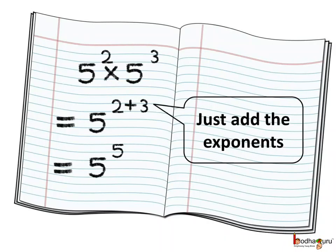We already know when bases are same, we can just add the exponents. For example, 5 to the power 2 multiplied by 5 to the power 3 is equal to 5 to the power 2 plus 3, or we can say 5 to the power 5.